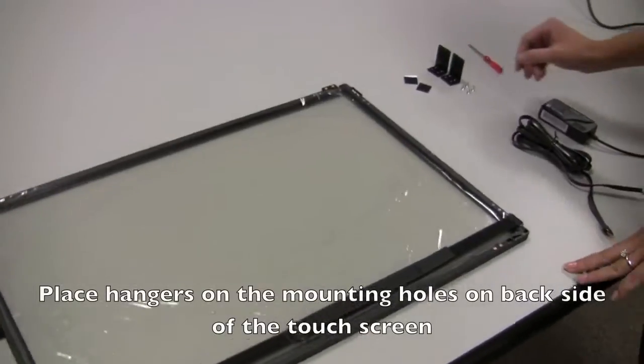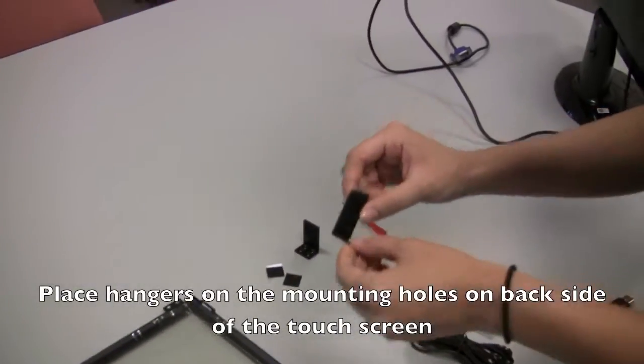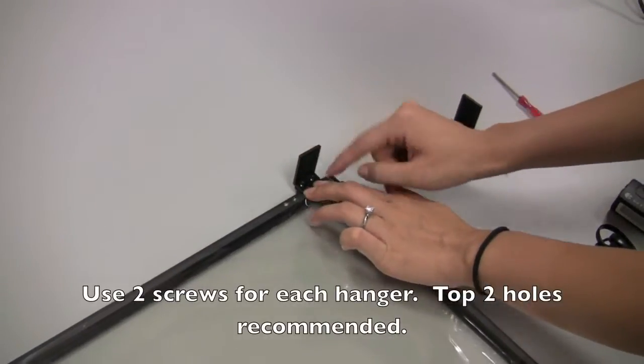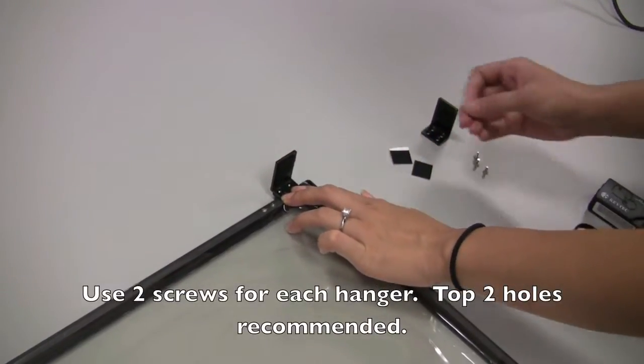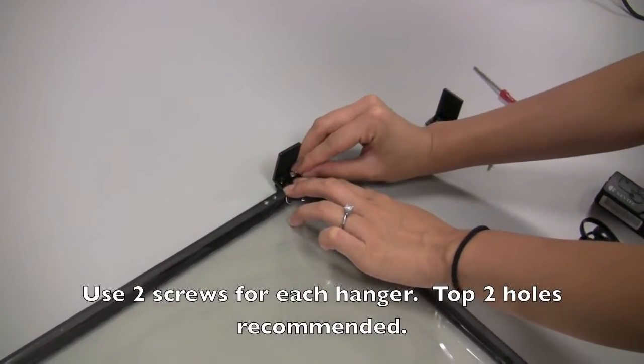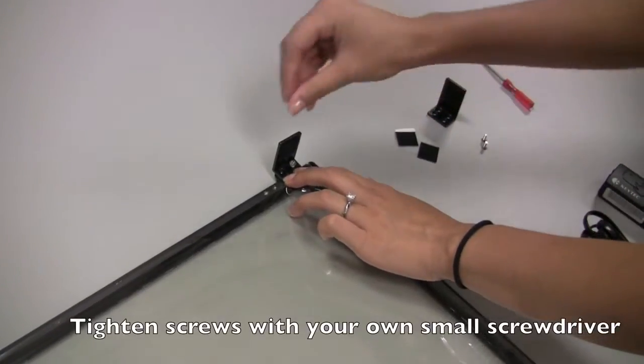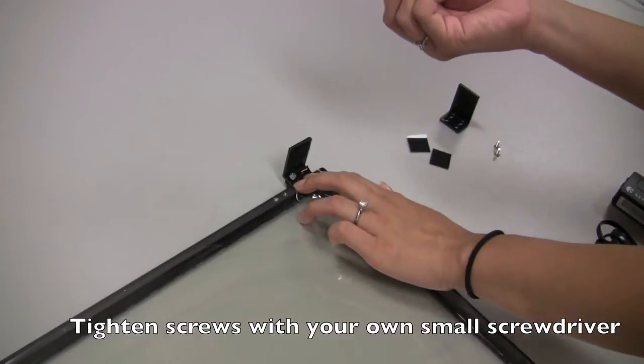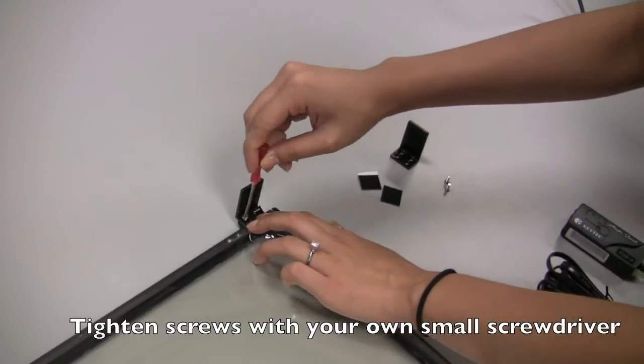The first step is we're going to take the hangers and place them on the touch screen like so. The first two dots shown, and then just add on the screws. You're going to use your own screwdriver, so just something small like this will work, and then proceed to screw on the screws.